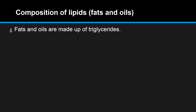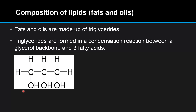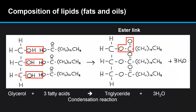Lipids, or fats and oils, are made up of triglycerides. Triglycerides are formed in a condensation reaction between a glycerol backbone and three fatty acids. Here we have a molecule of glycerol, which is also called propane-1,2,3-triol, and here's a fatty acid. Fatty acids have a long hydrocarbon chain with a carboxyl group, which is a C double bond O, C-OH group at one end. This condensation reaction between a molecule of glycerol and three fatty acids forms a triglyceride and three molecules of water. The bond between the glycerol molecule and the fatty acid is called an ester link.